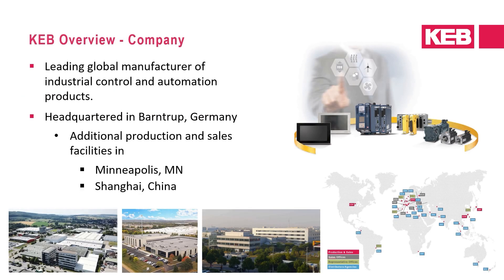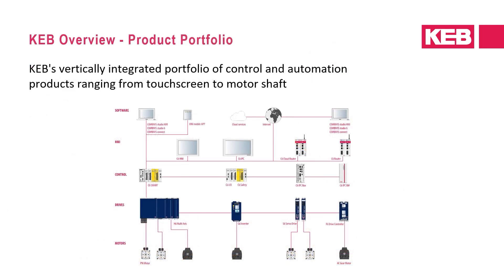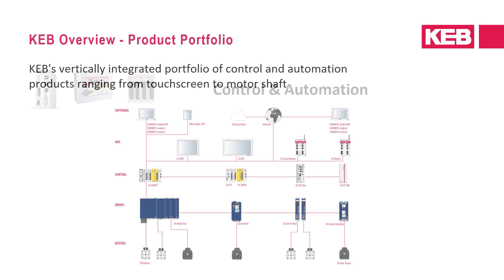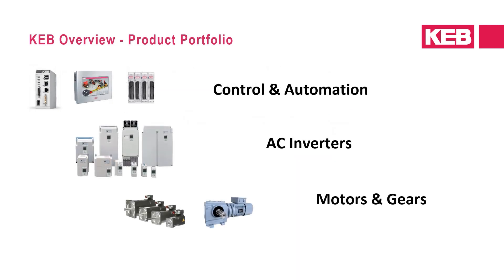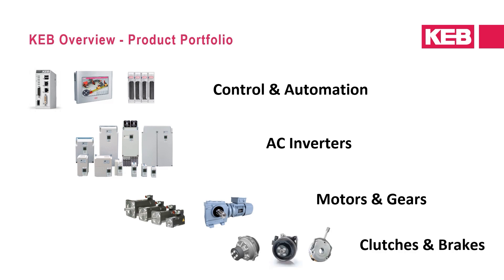KEB is a leading global manufacturer of industrial control and automation products. The company has manufacturing facilities in Germany, the United States, and China, with sales offices globally. KEB manufactures a full lineup of automation products from touch screen HMIs down to the motor shaft, including HMIs and embedded controls, AC inverters, AC induction and servo motors, geared motors, and electromechanical clutches and brakes.